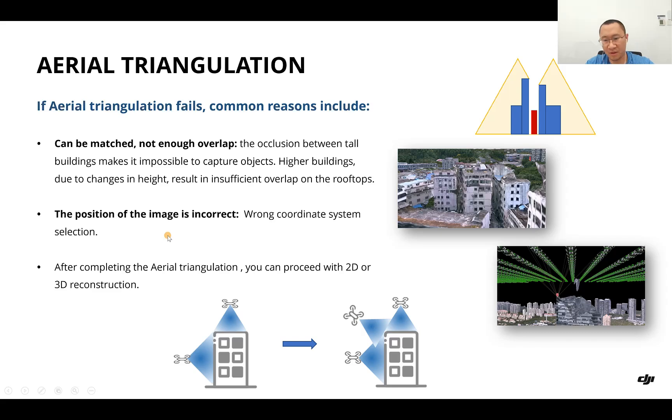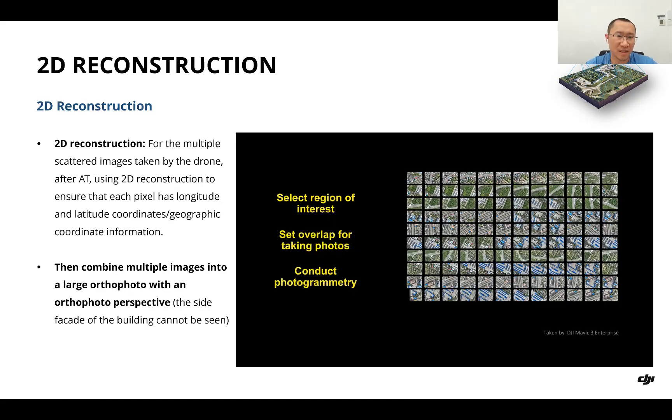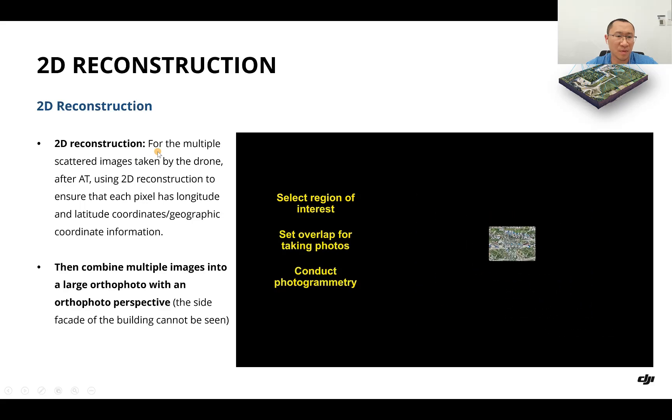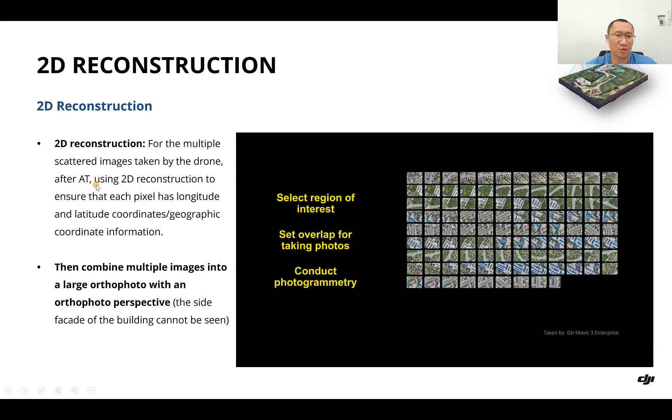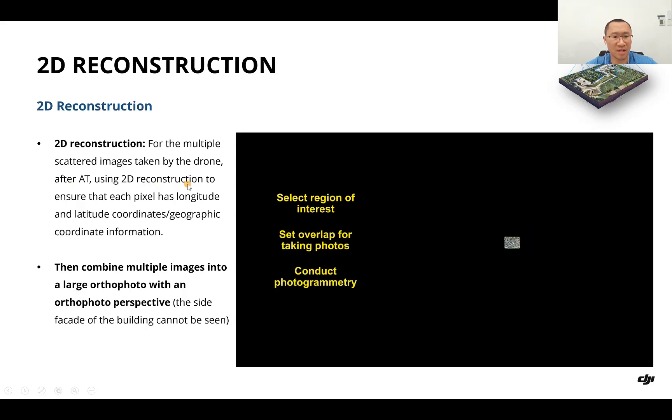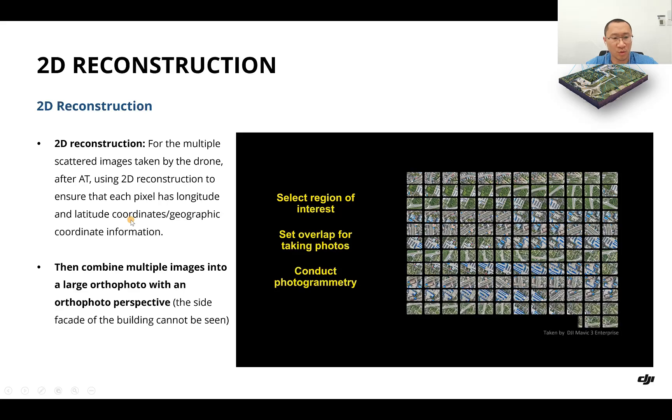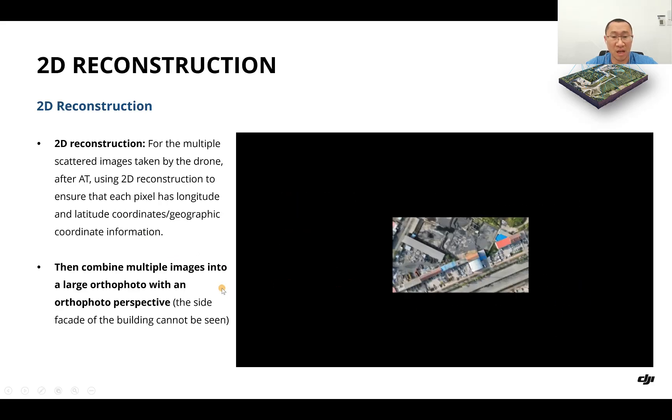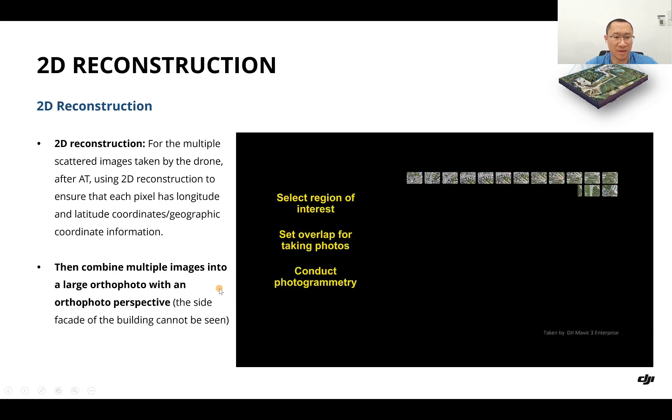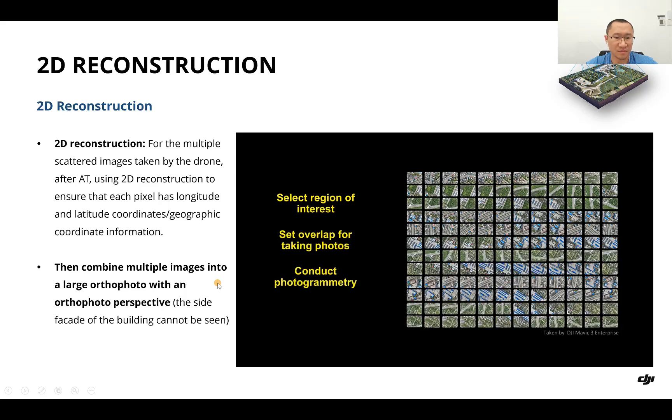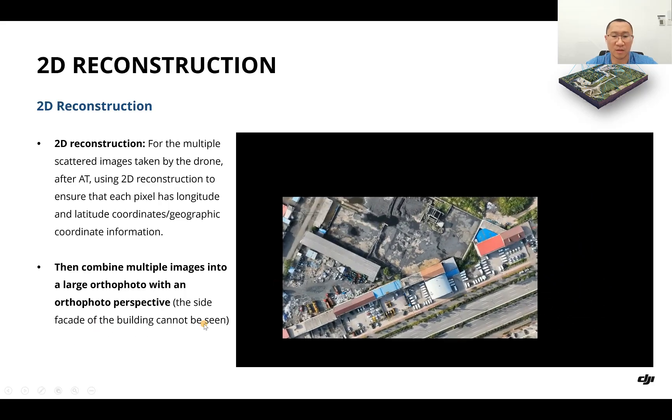After completing aerial triangulation, you can process 2D or 3D reconstruction. 2D reconstruction is for multiple scattered images taken by the drone. After aerial triangulation, we use 2D reconstruction to ensure that each pixel has latitude, longitude, and altitude. Then we combine the multiple images into a large orthophoto. With an orthophoto perspective, the side facade of the building cannot be seen.